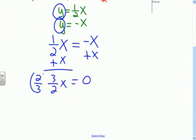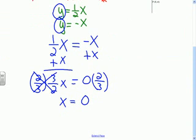Next, I'm going to multiply by 2 thirds to get rid of that fraction. If I do that on the left, I must do that on the right. That cancels and x equals 0.